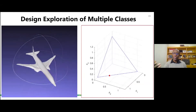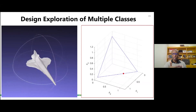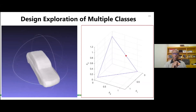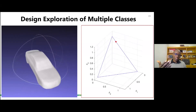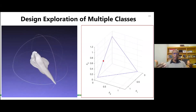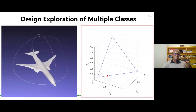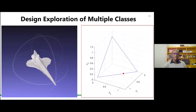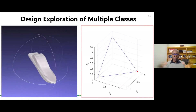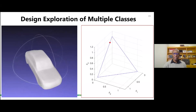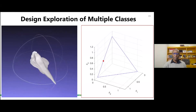You can also do multi-class. In the initial goal, the discriminator was only determining if a design came from a probability distribution of aircraft. Now we have three classes: aircraft, automobiles, and boats. You can again do some type of latent space optimization that combines these different classes.